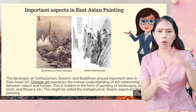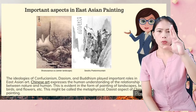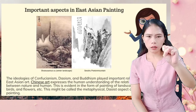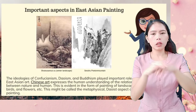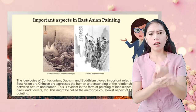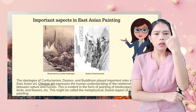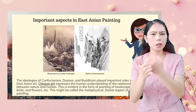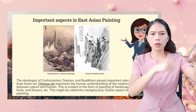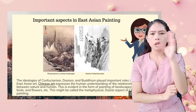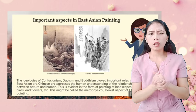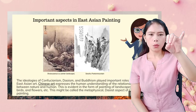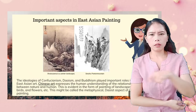The ideologies of Confucianism, Daoism, and Buddhism played important roles in East Asian arts. Chinese arts express the human understanding of the relationship between nature and humankind. This is evident in the form of painting and landscape, such as birds and flowers. This might be called the metaphysical aspect of Chinese painting.